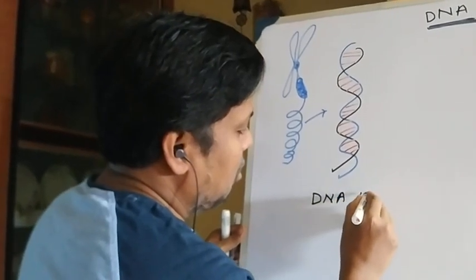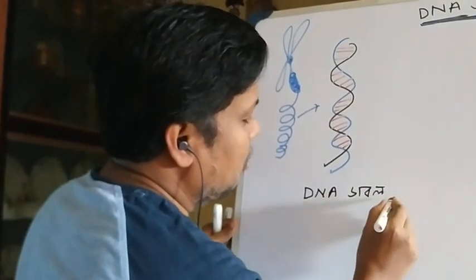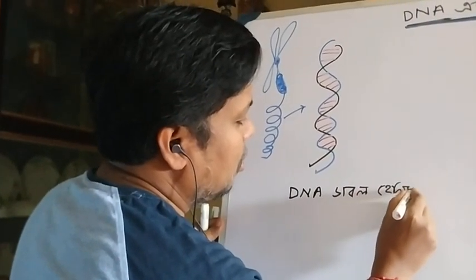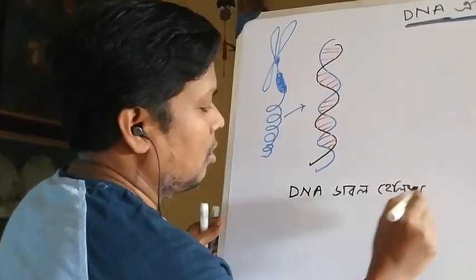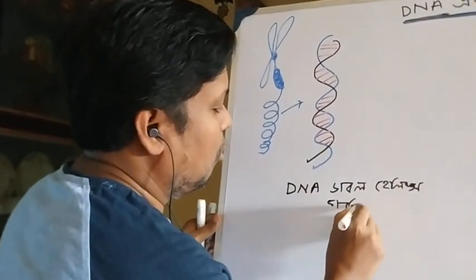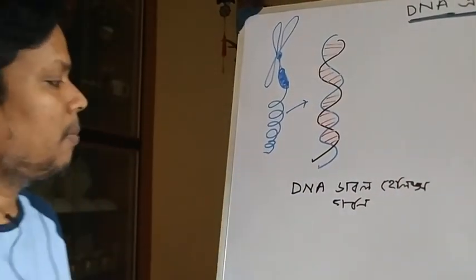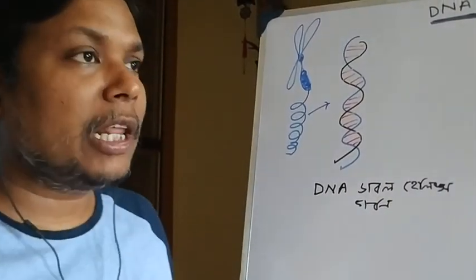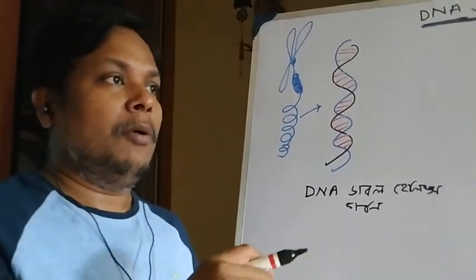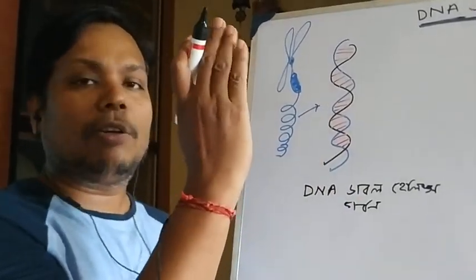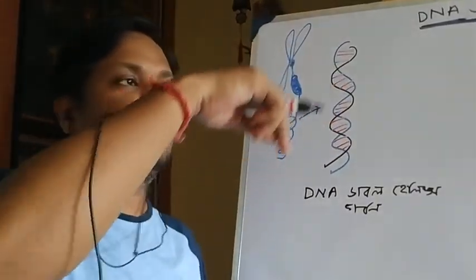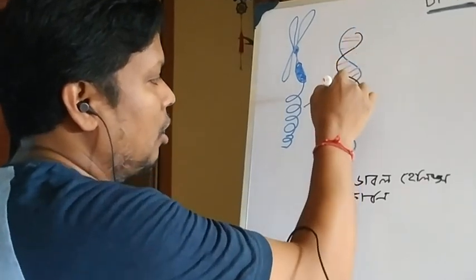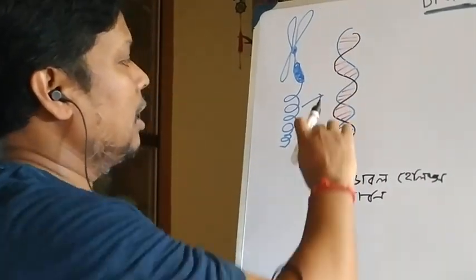DNA has a double helix structure. What is the name of the DNA? Imagine the root of the root of the electrons — so the DNA forms a double helix.